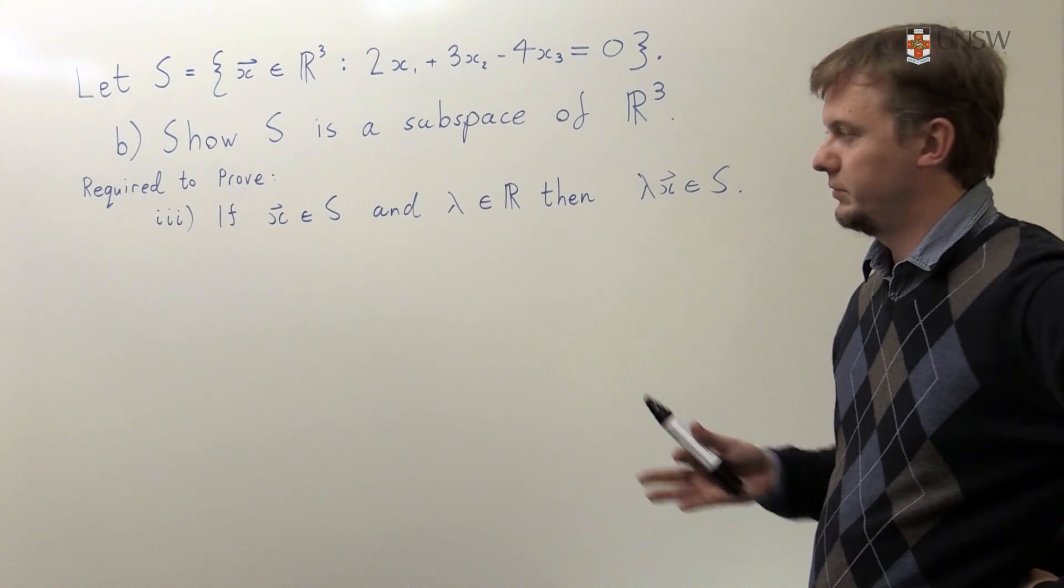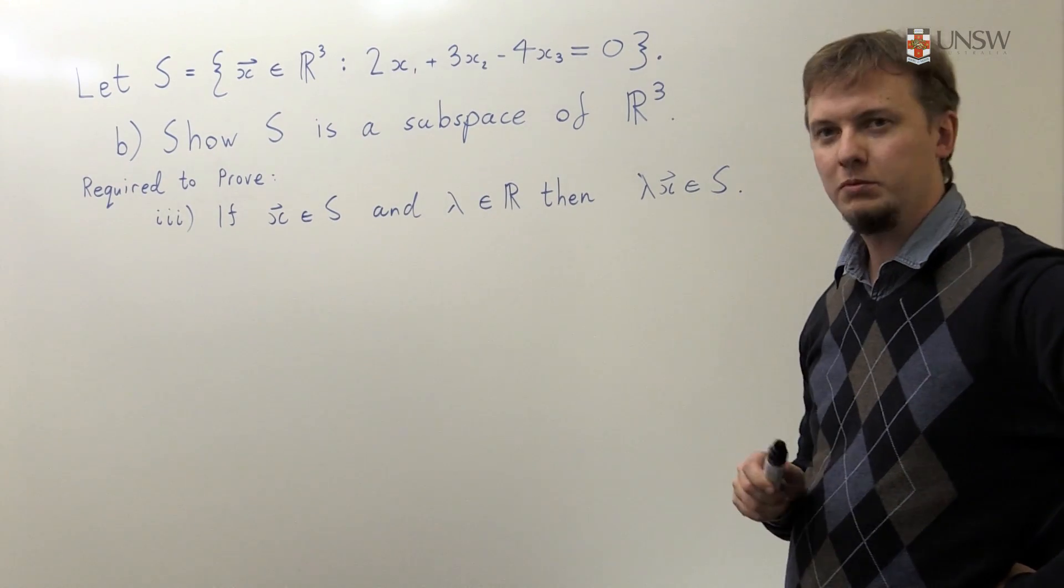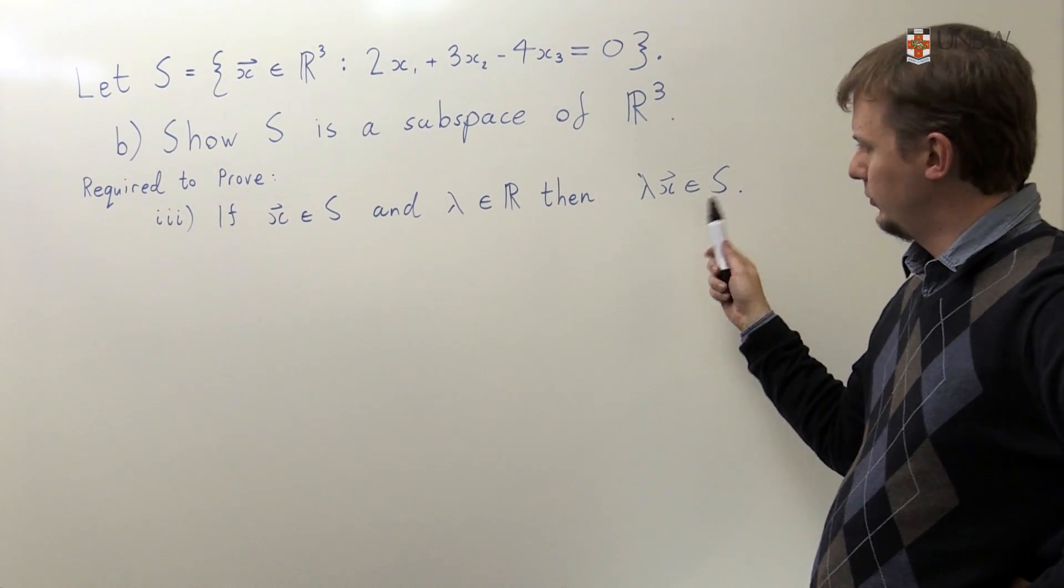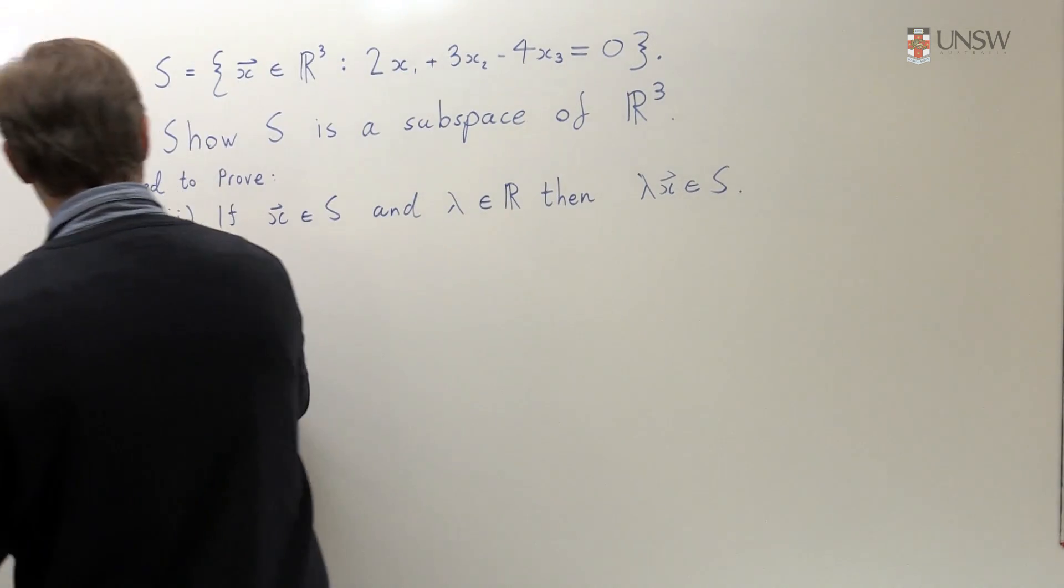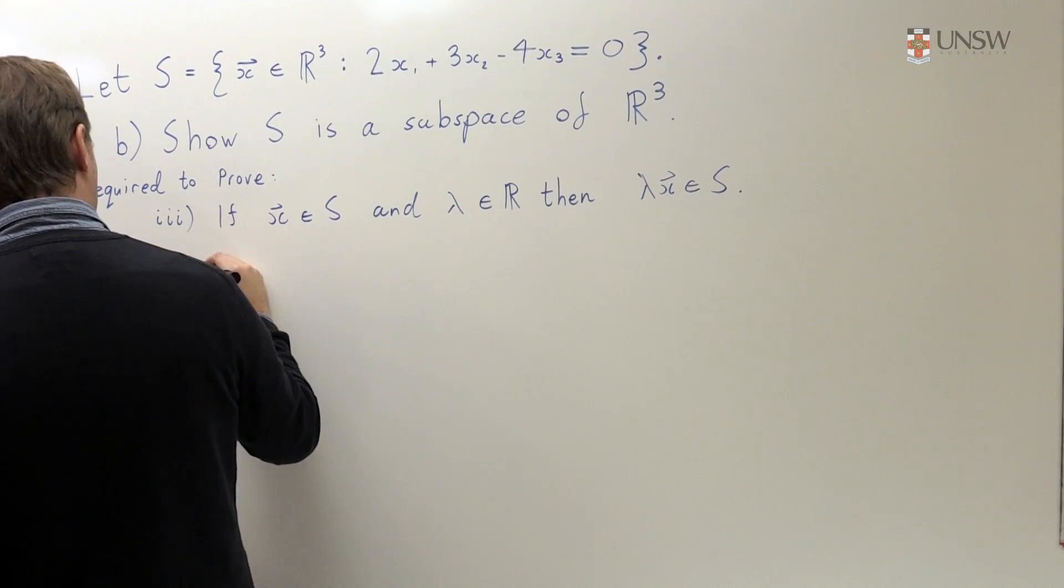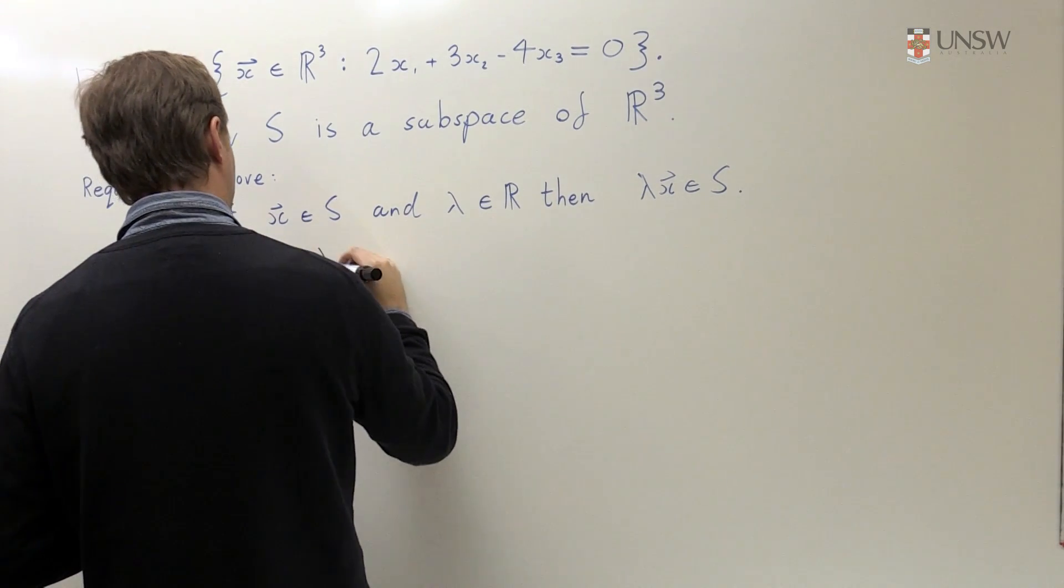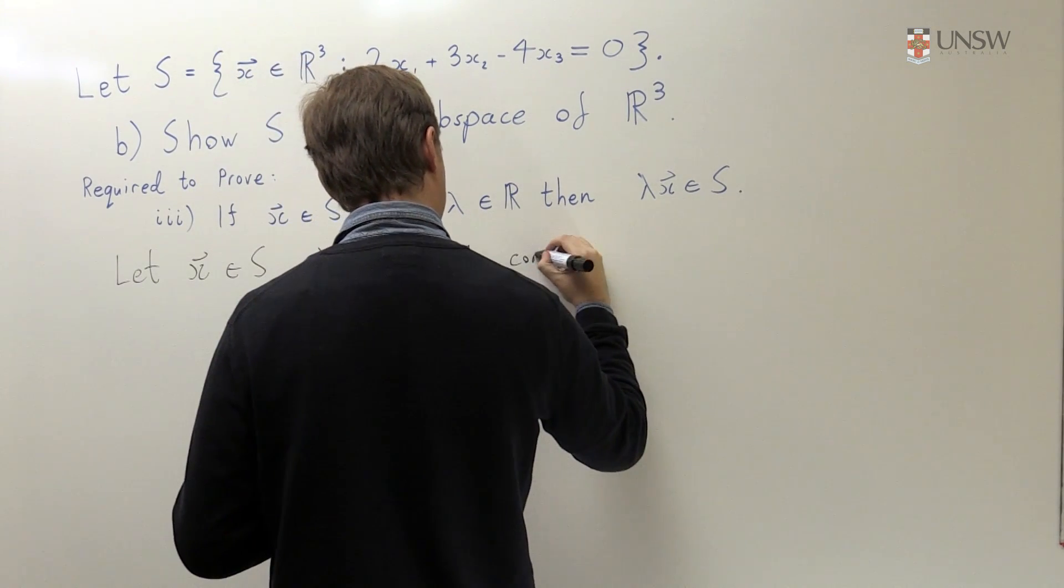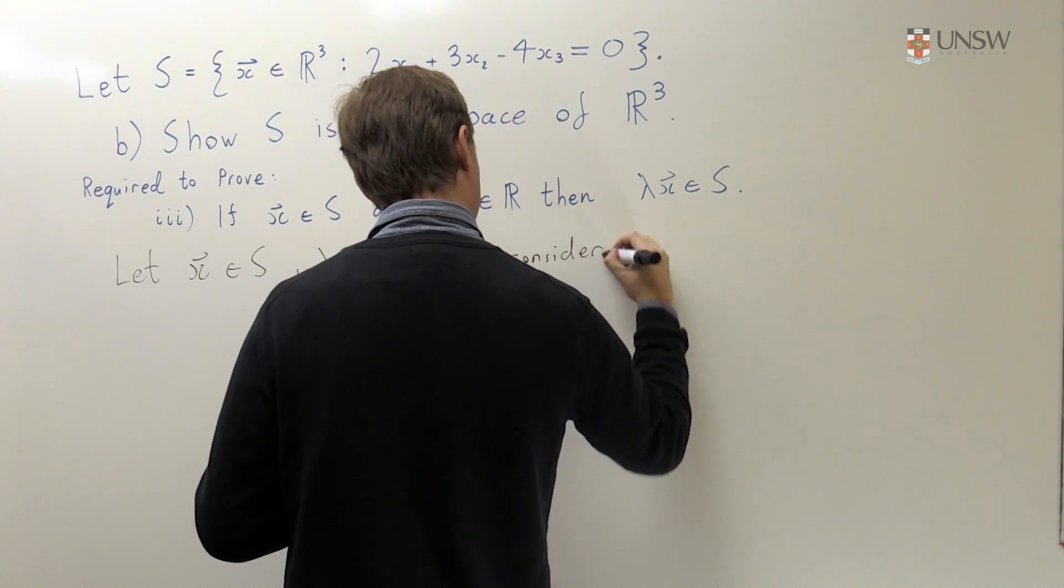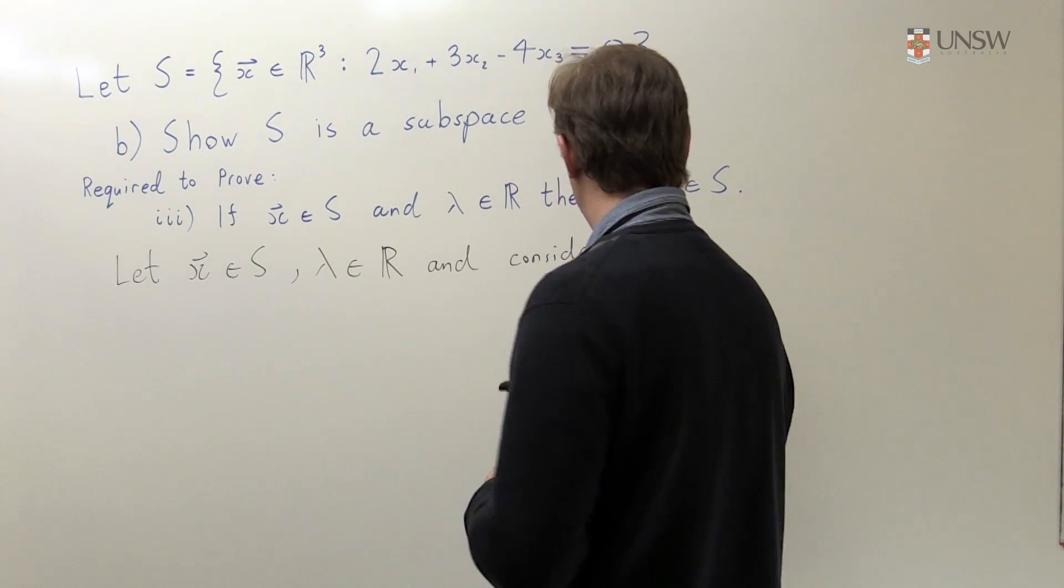Okay, so the final property we need to show is that if we take a vector from S and we multiply it by a real number, then we also get something in S. So let's start the same way as before. Let's just take X to be an element of S, lambda to be a real number, and let's consider the vector lambda times X.